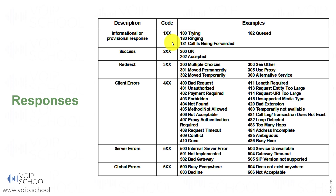There are basically two 2XX messages: 200 OK and 202 Accepted. 200 OK is used for INVITE requests, and 202 Accepted is used for non-INVITE requests.